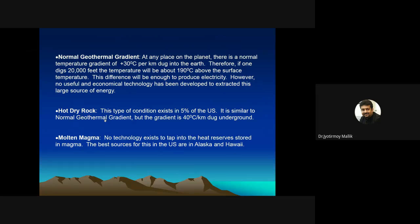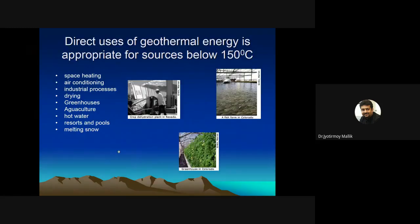Hot dry rock conditions exist in about 5% of the U.S., where the geothermal gradient is around 40°C per kilometer. For salt and magma resources, no technology currently exists to tap those heat reserves — the best sources in the U.S. are in Alaska and Hawaii.